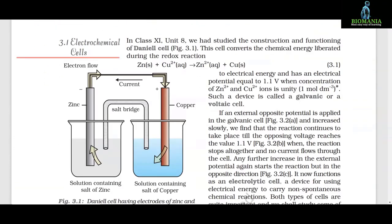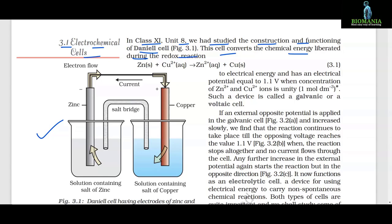3.1 Electrochemical cells. In class 11th, unit 8, we had studied the construction and functioning of Daniel cells. Figure 3.1 — this cell converts the chemical energy liberated during the redox reaction to electrical energy and has an electrical potential equal to 1.1 volt when concentration of Zn²⁺ and Cu²⁺ ions is unity. Such a device is called a galvanic or a voltaic cell.